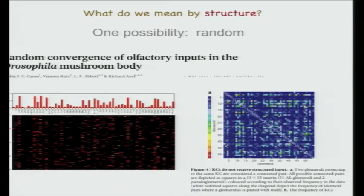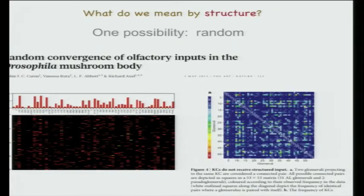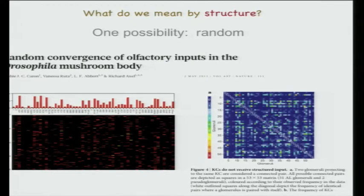What people measured was the first feedforward layer in the fly's olfactory system. This matrix took a couple of years to measure, and the gist of the paper is that it is as good as random. The primary olfactory system of a fly, which clearly does something for a fly, appears random—people tried to find structure and failed. Random networks can also do quite a few interesting things.